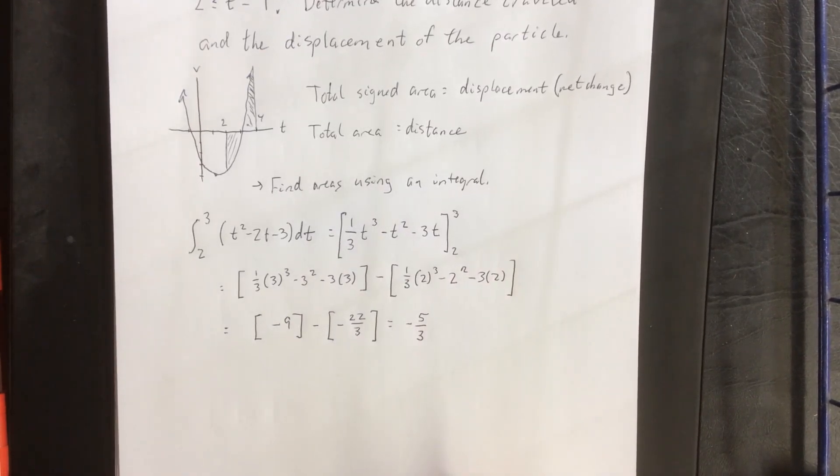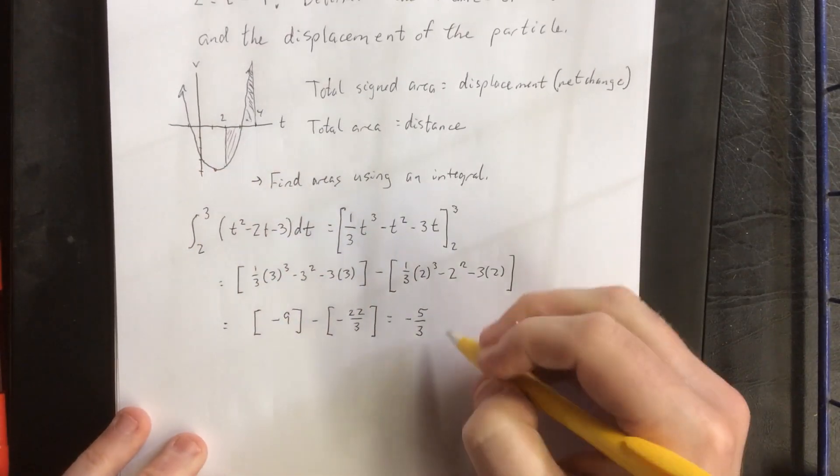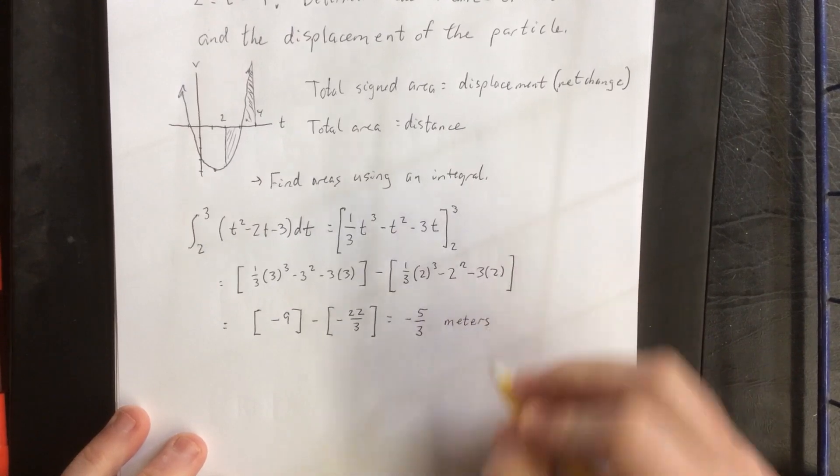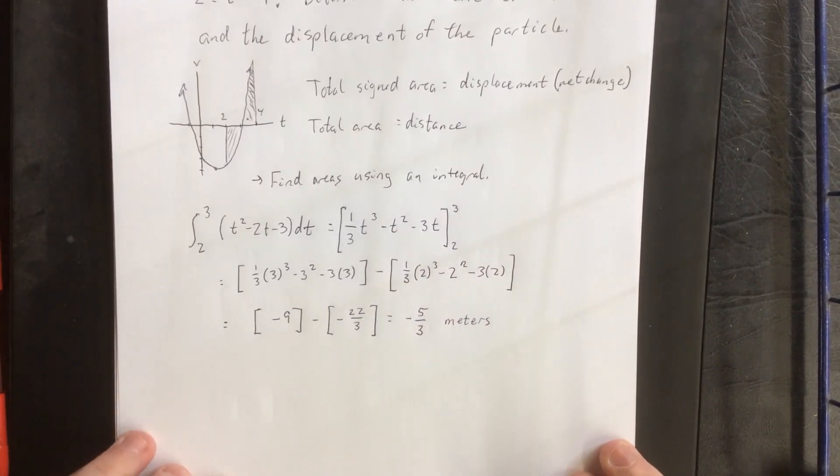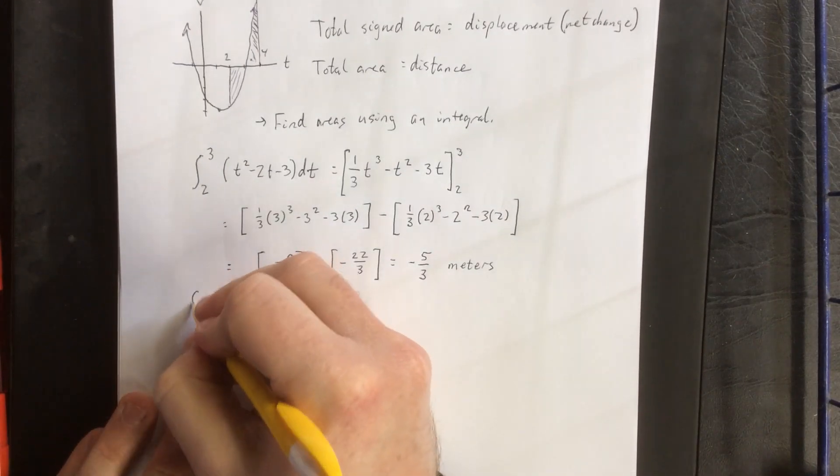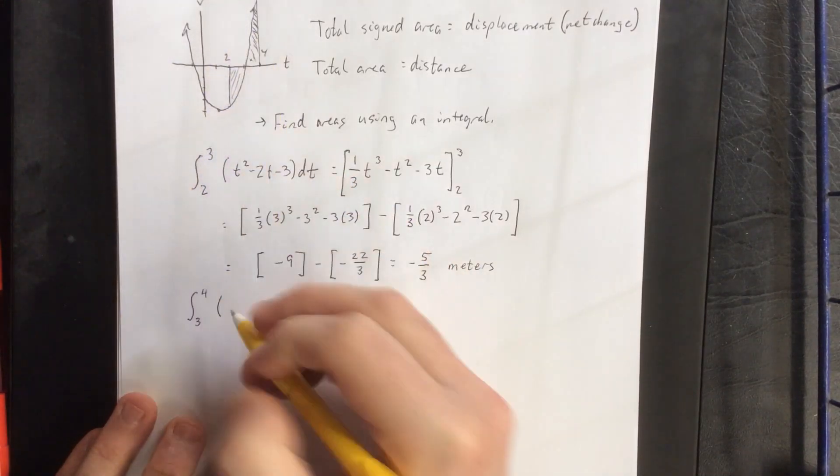So during the first second of the interval, from t = 2 to t = 3, this thing moves a total of -5/3 meters in a negative direction. Now to figure out how far it moves in the positive direction, we'll do a definite integral from 3 to 4 for the second second of the interval.